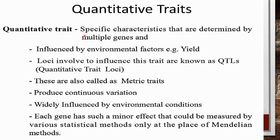Quantitative traits are influenced by environmental factors. An example is yield. The loci involved in influencing this trait are known as QTLs, or Quantitative Trait Loci. These are also called metric traits. They produce continuous variation and are widely influenced by environmental conditions. Each gene has such a minor effect that it can only be measured using statistical methods, rather than Mendelian methods.